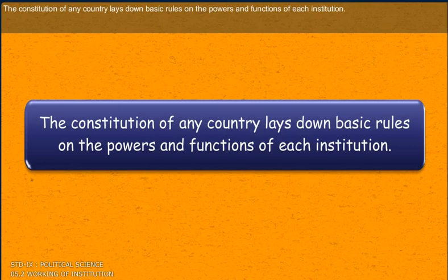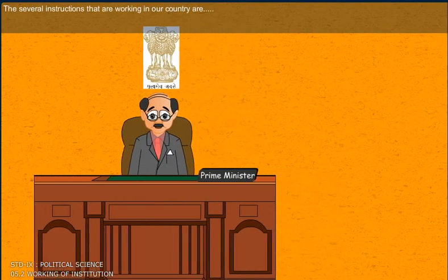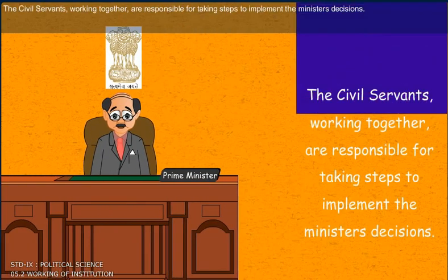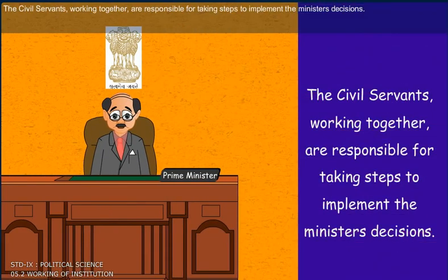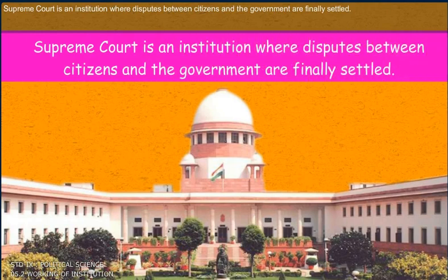The constitution of any country lays down basic rules on the powers and functions of each institution. The civil servants working together are responsible for taking steps to implement the minister's decisions. The Supreme Court is an institution where disputes between citizens and the government are finally settled.